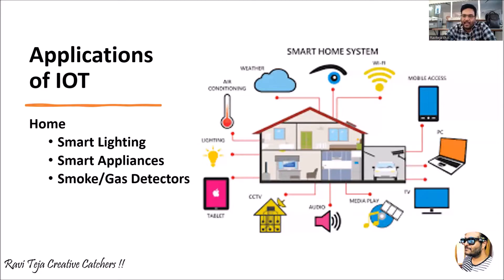A smart lighting system can be activated automatically or manually. Sensors detect the light level — as soon as the sun goes down or darkness occurs in a particular area, the sensor senses it and switches the light on or off. We can also switch lights on and off manually using a smartphone connected to the internet.